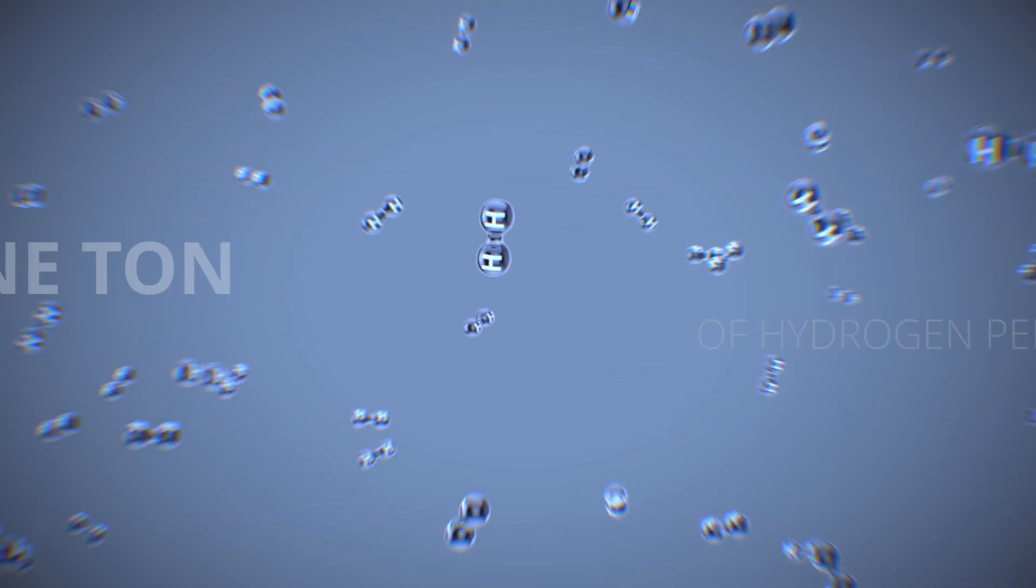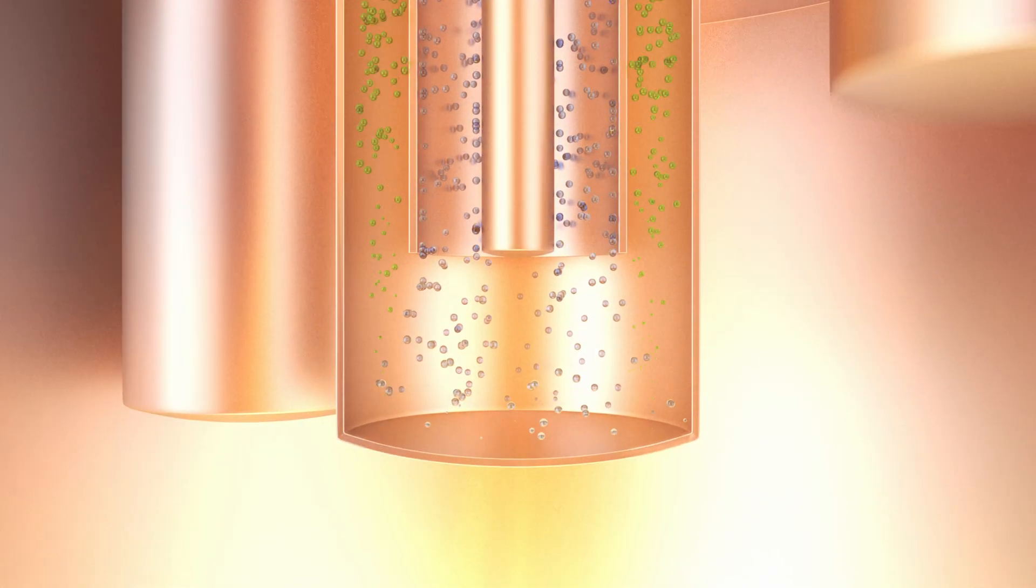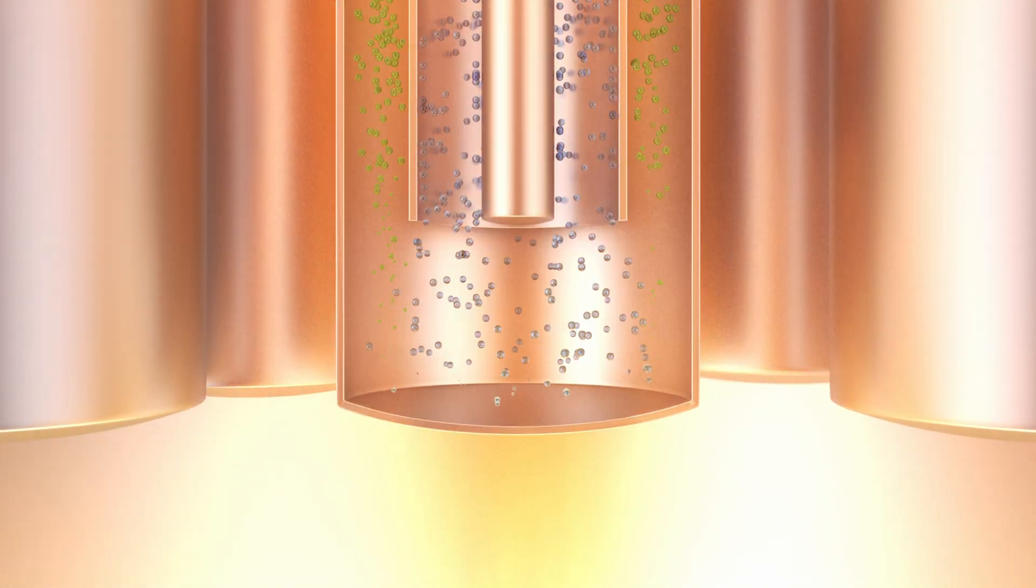Beotex hydrogen generation units produce one ton of hydrogen per day. Scaling up is achieved by adding additional bayonet reactors and resizing some system components.